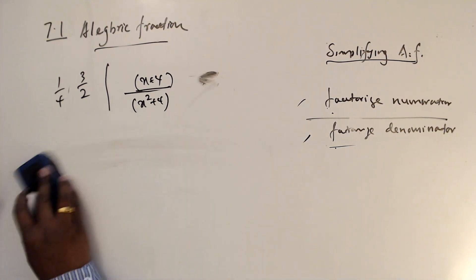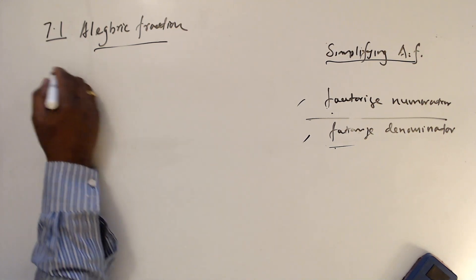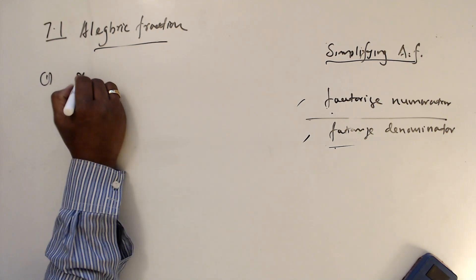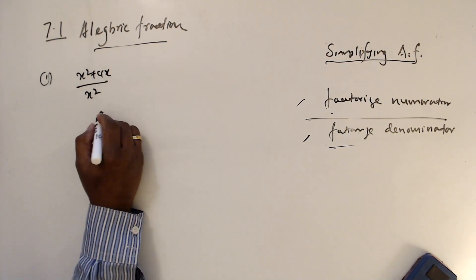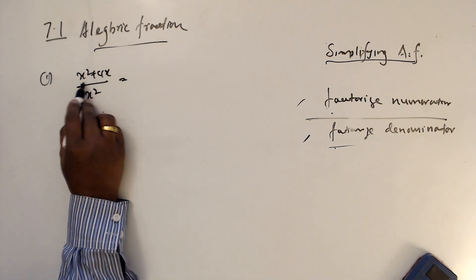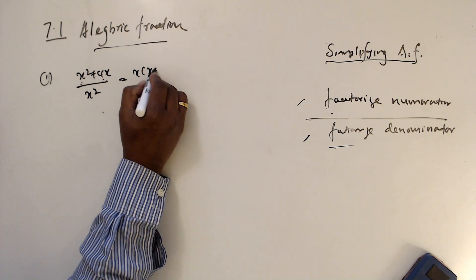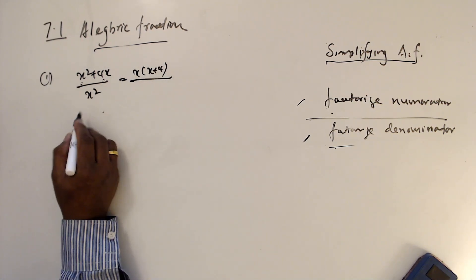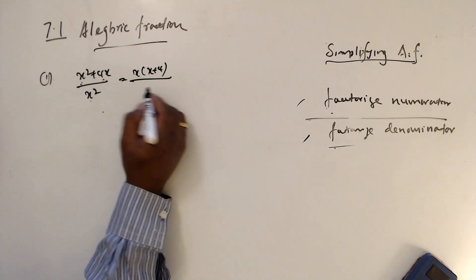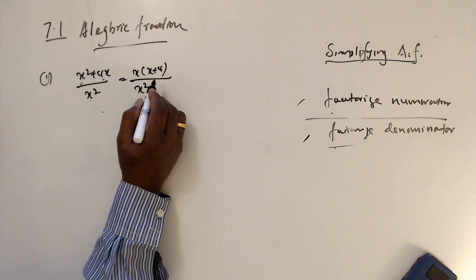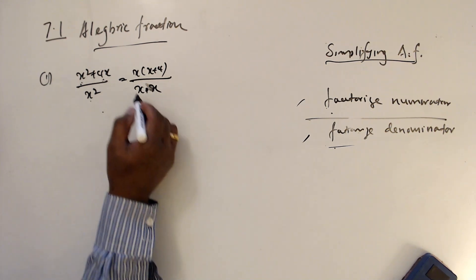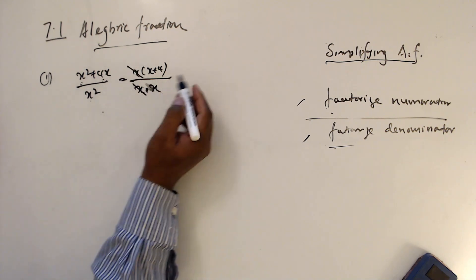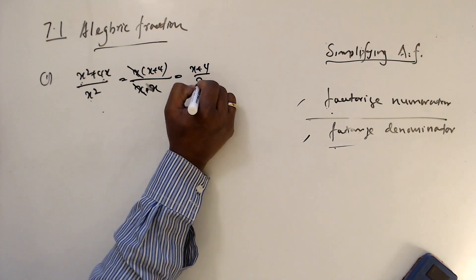In the same way, you can simplify algebraic fractions. For example, (x² + 4x) over x². Factorize the numerator: x is common, so take x out to get x(x + 4). The denominator x² we write as x times x. Cancel the common x, and the answer is (x + 4) over x.